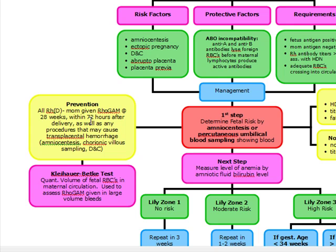There is a test called the Kleihauer-Betke test that you need to know. This test quantitates the volume of fetal RBCs in the maternal circulation by differential staining of fetal and maternal RBCs on peripheral smear. It is used to assess the appropriate RhoGAM dose in large volume bleeds, such as abrupto placenta.